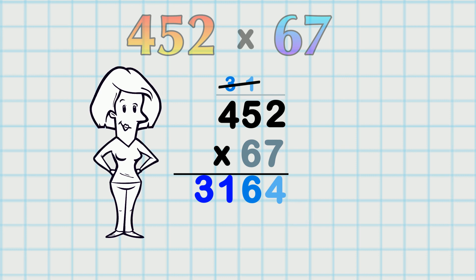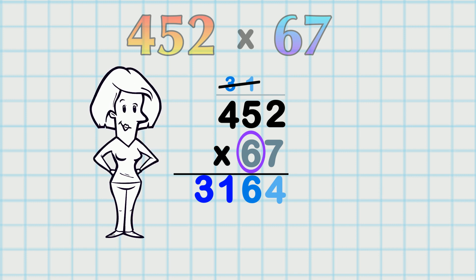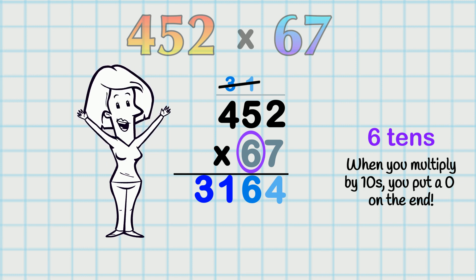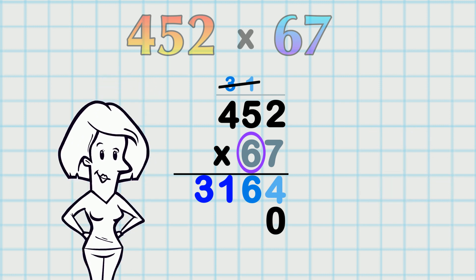We're going to multiply this by 6. It's not 6 ones though, is it? It's the 60 part of 67. It's 6 tens. And as you know, when you multiply by 10s, you put a 0 on the end. We put in a 0 before we multiply anything on the second line. Alright!